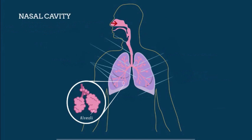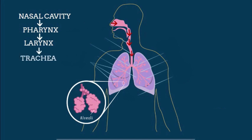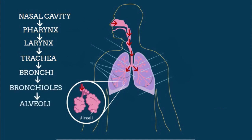When breathing in, air enters the nostrils and passes through the nasopharynx and oral pharynx into the trachea, and splits into the right and left bronchi, which rebranch into bronchioles, each of which terminates in a cluster of alveoli.